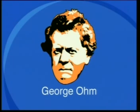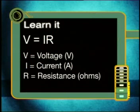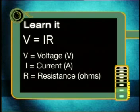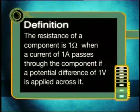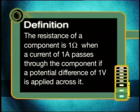George Ohm formulated the relationship between potential difference, current, and resistance known as Ohm's Law. Mathematically, he expressed it as V equals I times R, where V equals the voltage measured in volts, I is the current measured in amperes, and R is the resistance measured in ohms. This relationship is only true if the temperature of the conductor remains constant. Resistance is measured in ohms, named after George Ohm. The resistance of a component is 1 ohm when a current of 1 ampere passes through it with a potential difference of 1 volt applied across it.